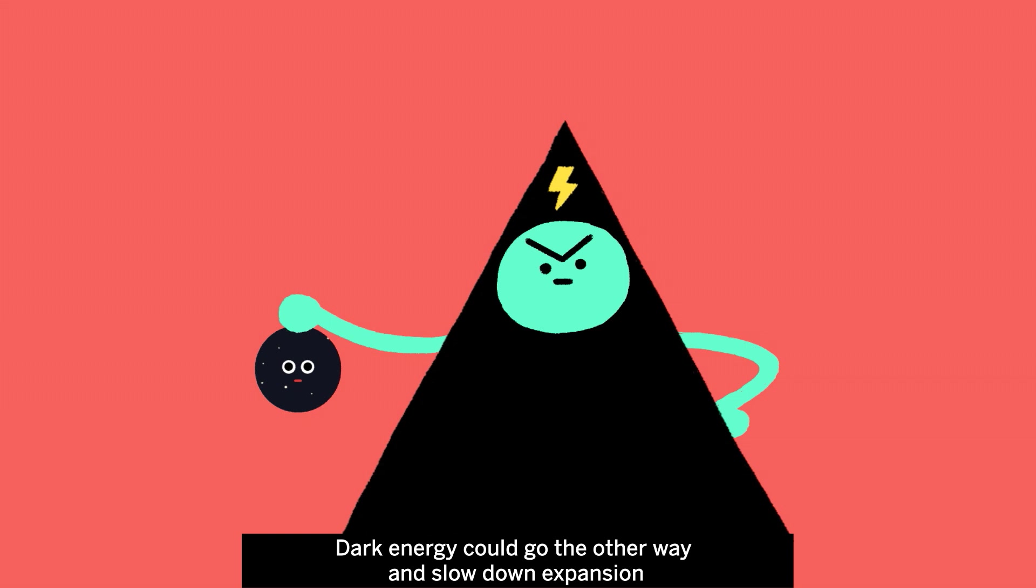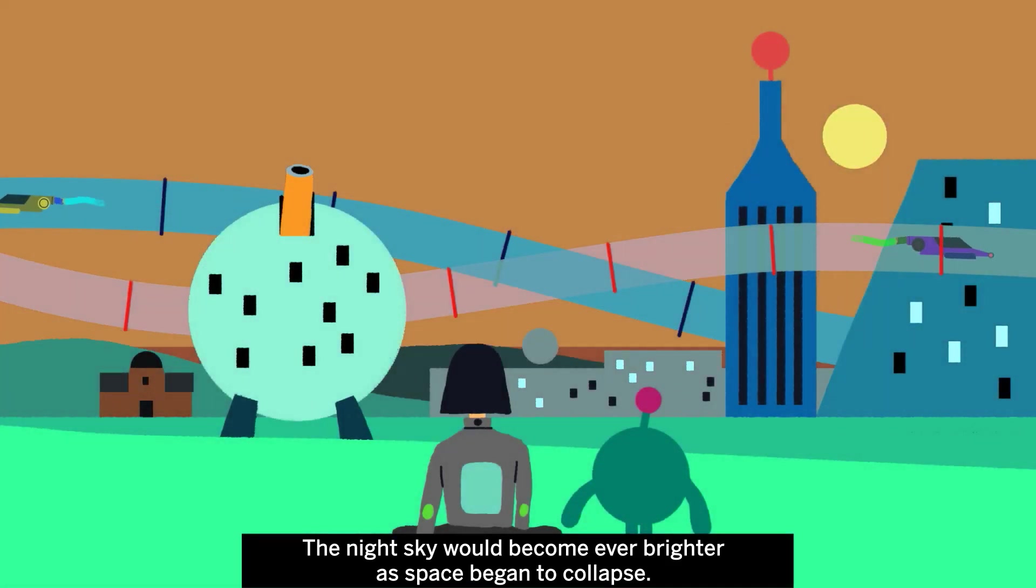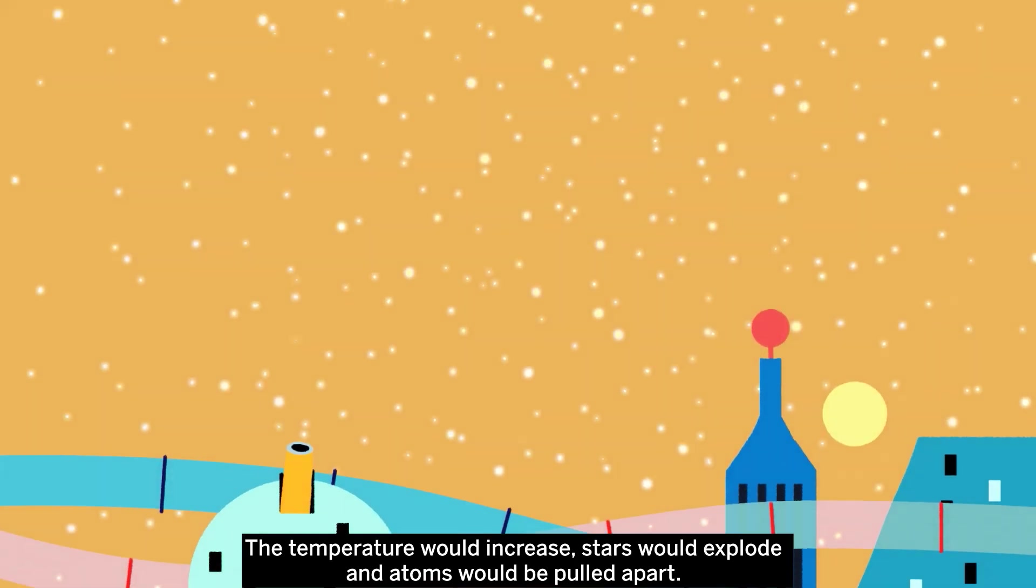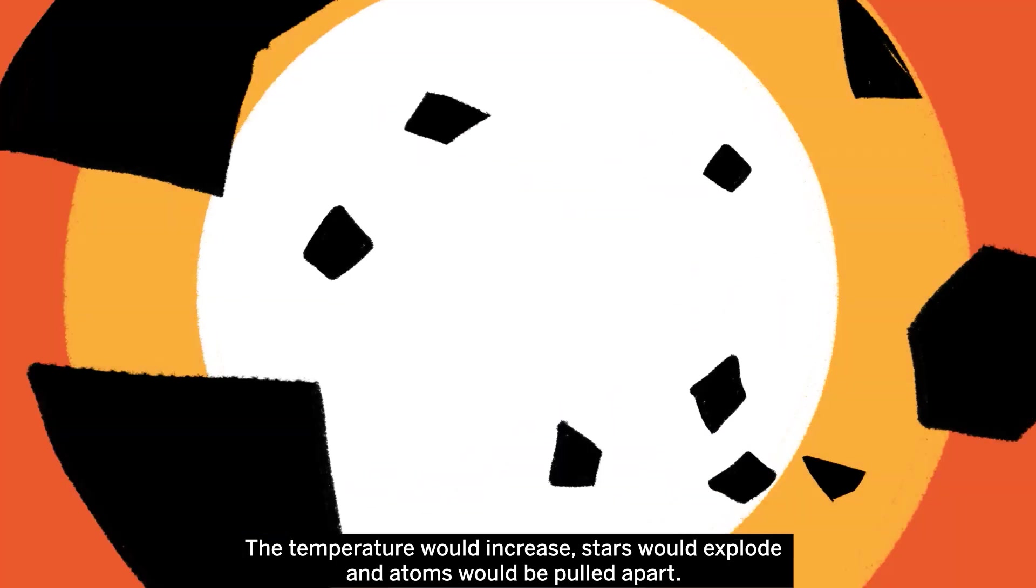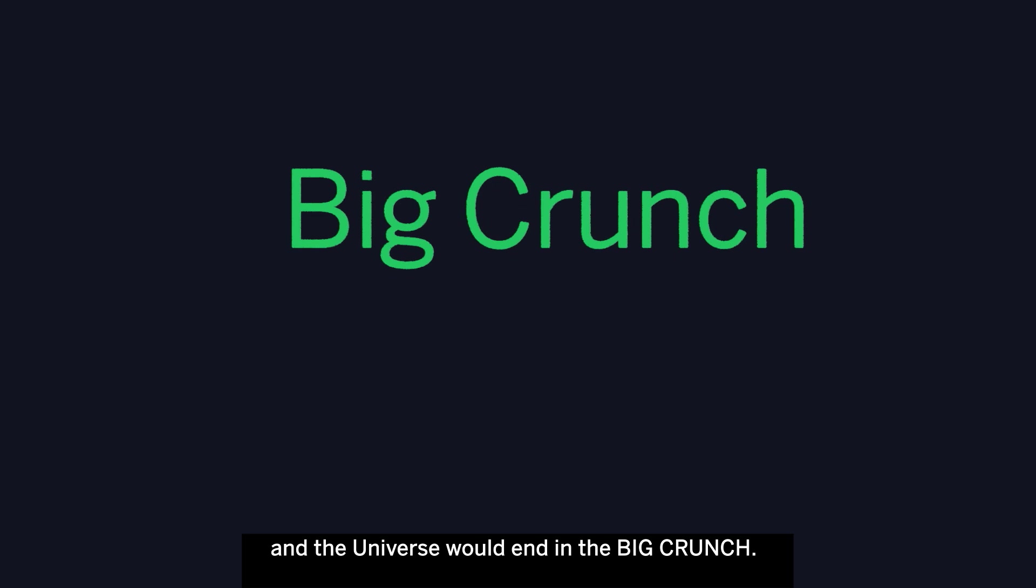Dark energy could go the other way and slow down expansion. The night sky would become ever brighter as space began to collapse. The temperature would increase, stars would explode, and atoms would be pulled apart. All matter would collapse into black holes, and the universe would end in a big crunch.